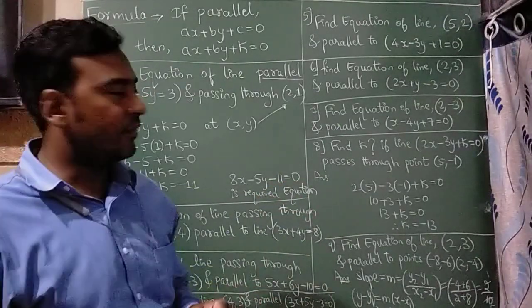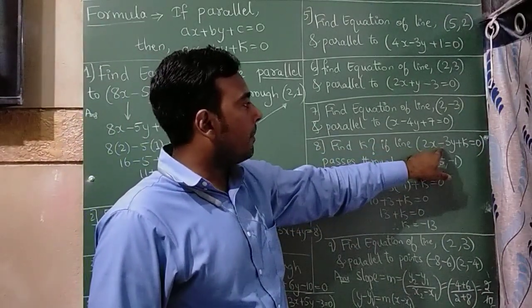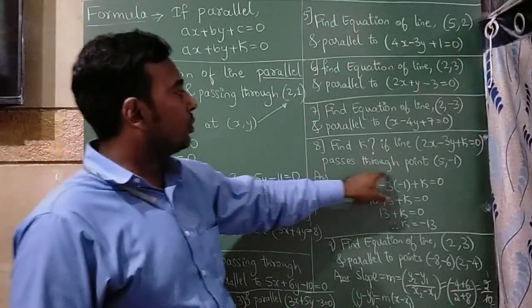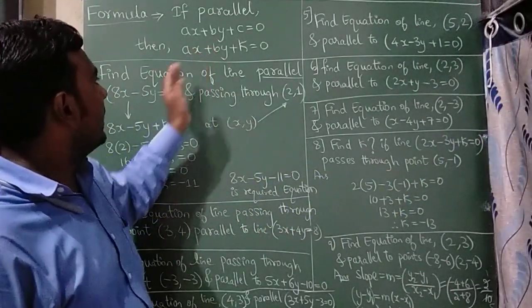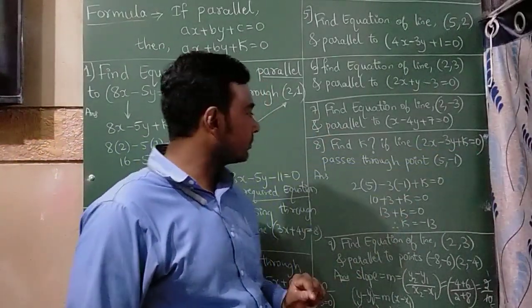Now eighth question is little different. Find k if the line is 2x minus 3y plus k is equal to 0 passes through the point 5 minus 1. Instead of they are giving line directly they have given the question as a k.